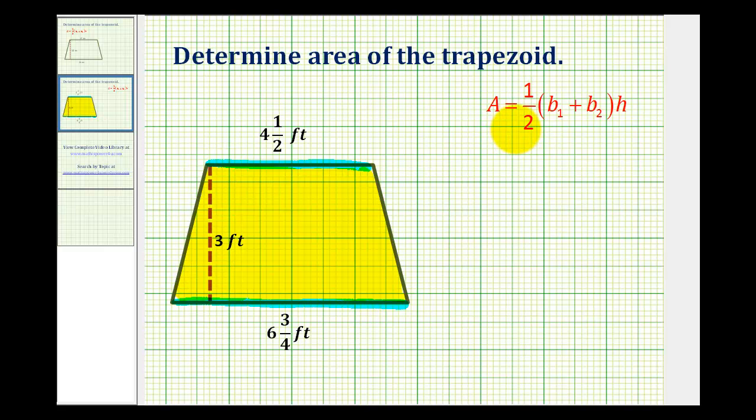The formula to determine the area of a trapezoid is the area equals one-half times the quantity of the length of base one plus the length of base two times the height, where base one and base two are the two parallel sides.